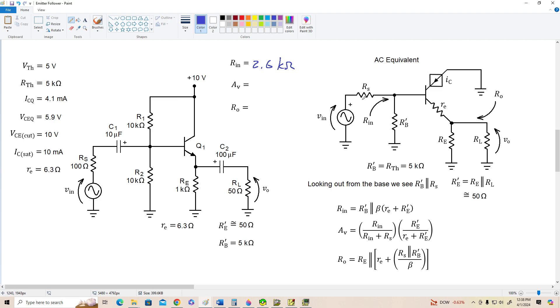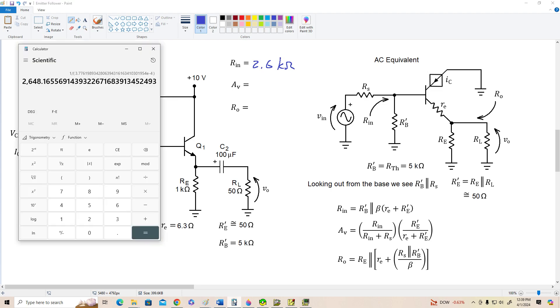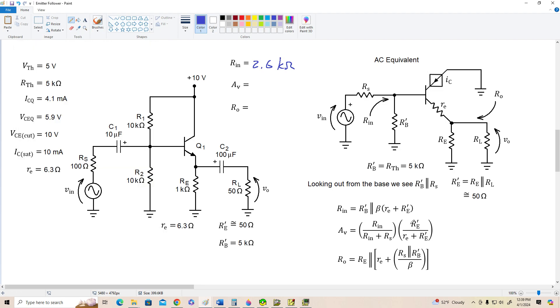Alright, our voltage gain. Let's disregard this divider for a second, and we'll just determine the actual gain of the transistor itself. So that's going to be R prime E, which is about 50 ohms, divided by 50 ohms plus little RE, which is 6.3. So divided by 56.3 gives the transistor itself a gain of about 0.9.